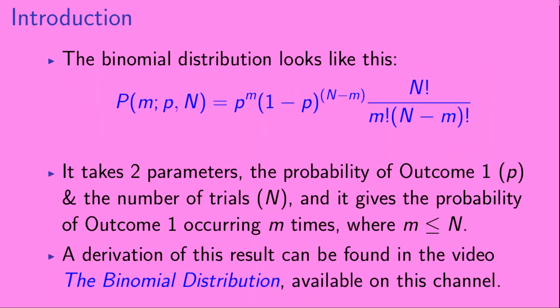The binomial distribution looks like this. We call it capital P of M, given p and n. The binomial distribution takes two parameters: the first one is the probability of outcome 1, which is what we call little p, and the number of trials, which is what we call n, and it gives the probability of outcome 1 occurring exactly m times, where m is less than or equal to n.